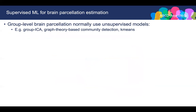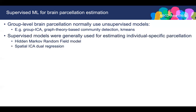To estimate group-level parcellations, people normally use unsupervised models such as k-means, spatial ICA, or some graph theory-based approaches. In today's talk, I will introduce methods to estimate individual parcellations. These models are normally supervised models. I will introduce the hidden Markov random field model and also the spatial ICA dual regression.